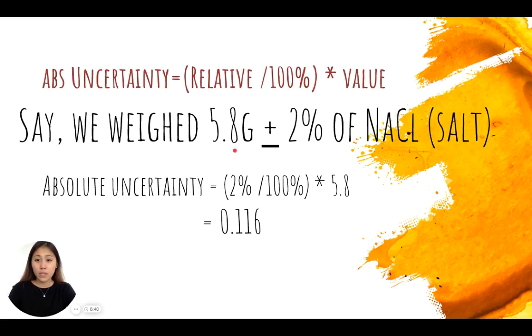This then means that our absolute uncertainty needs to be to the tenths digit as well. Also we see that our relative uncertainty is to one significant figure only. So this means our absolute uncertainty also can only be one significant figure.